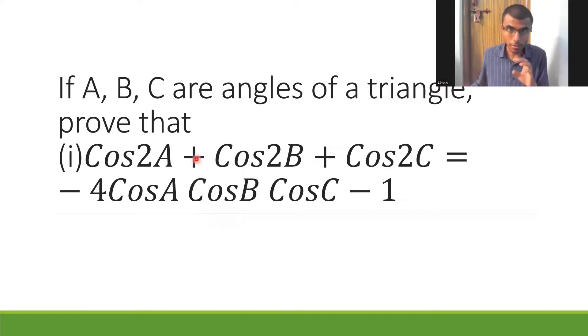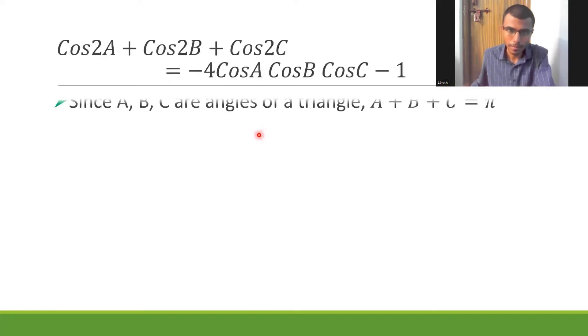Now I'm going to start with what is already given. Here we are given that A, B, C are angles of a triangle. What is sum of angles in a triangle? 180 degrees. So A + B + C is nothing but equal to π, which is 180 degrees. That's going to be my first step. A + B + C is equal to π since A, B, C are angles of a triangle. This would be my first step.